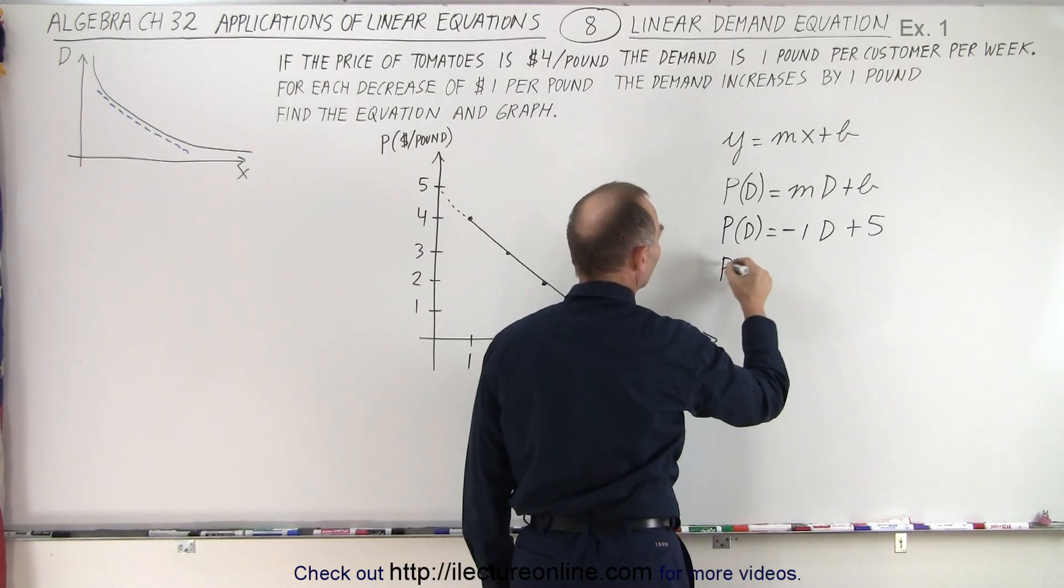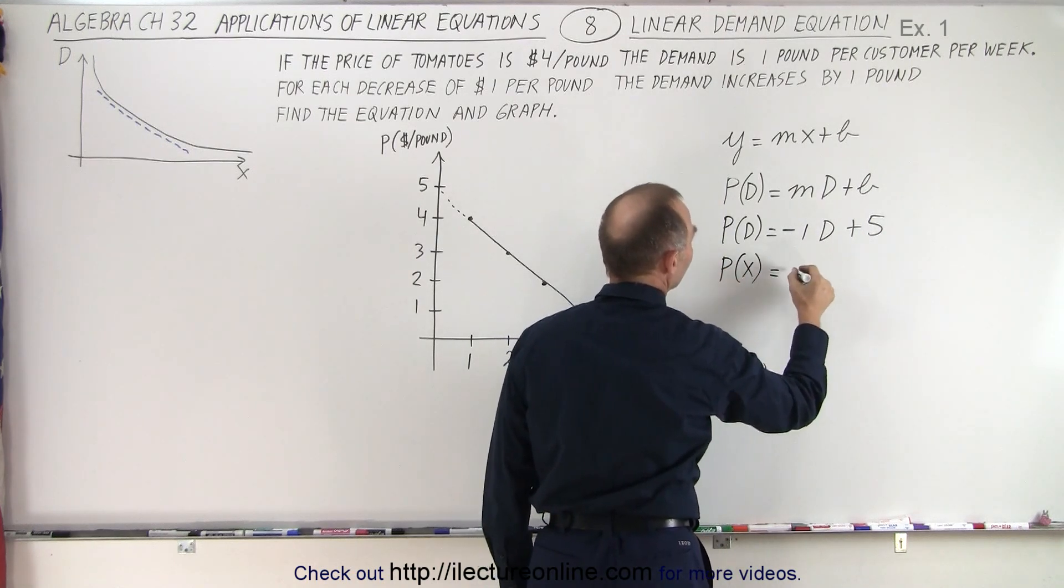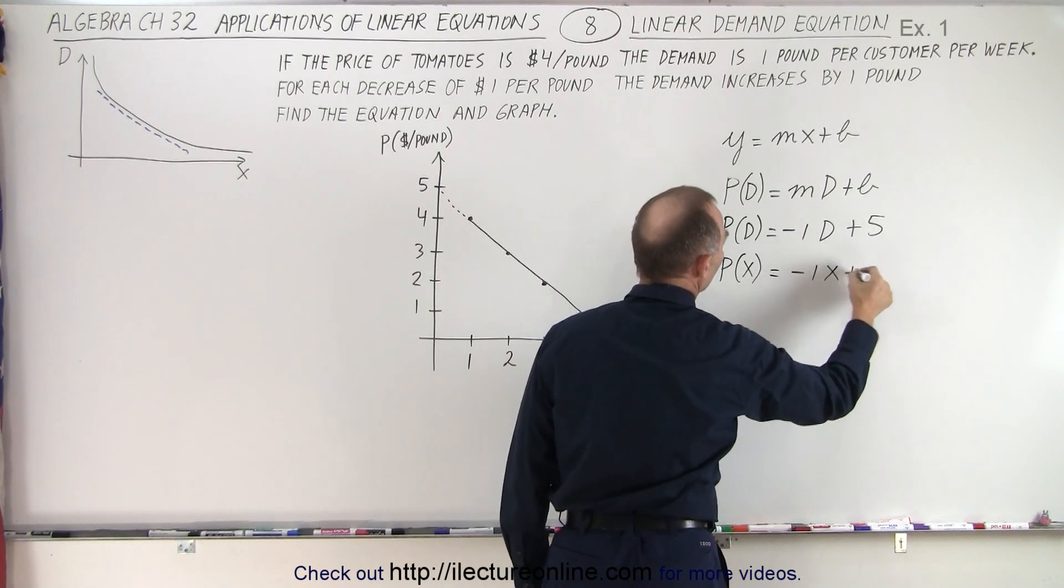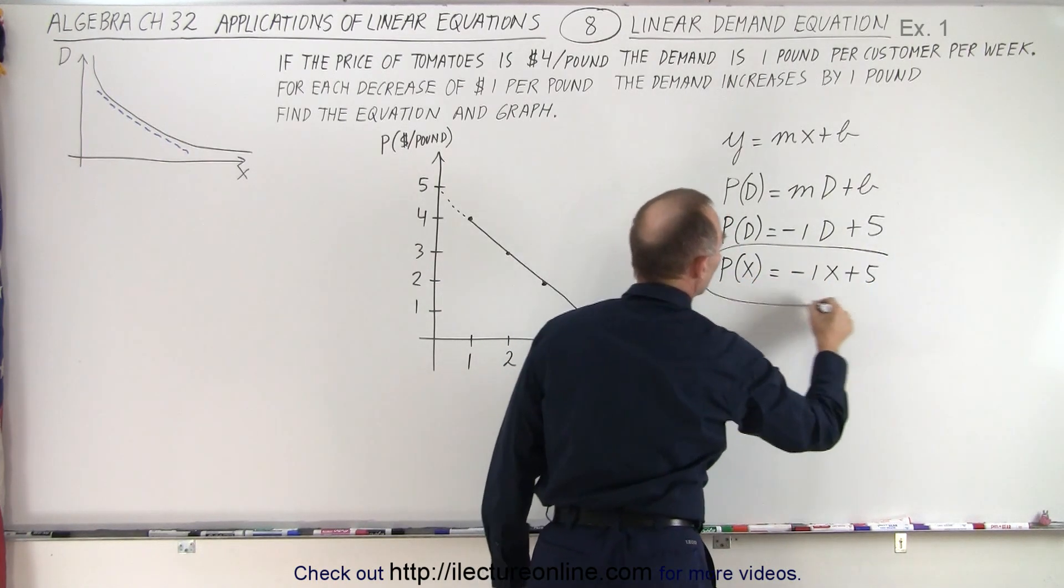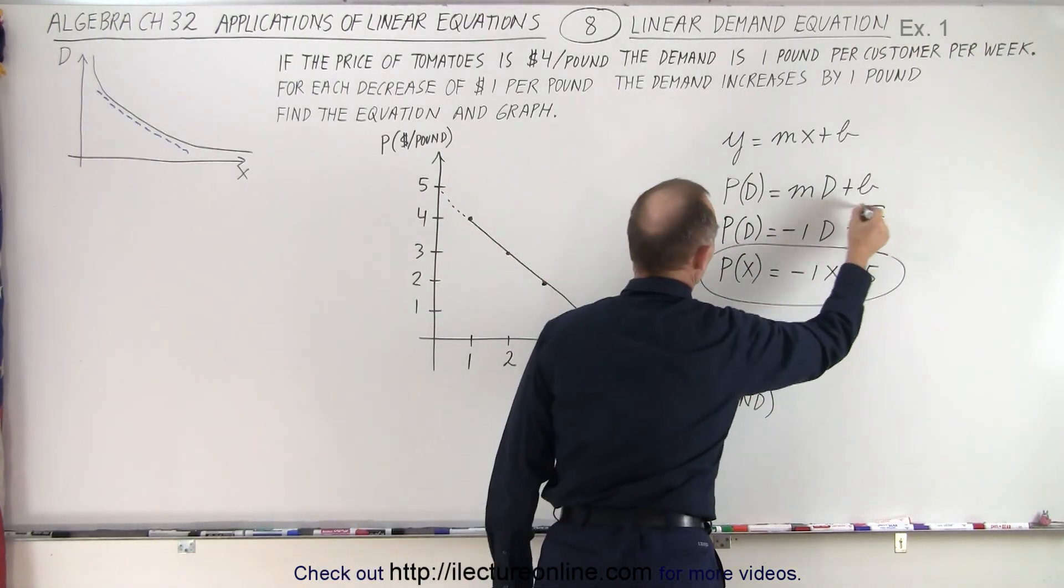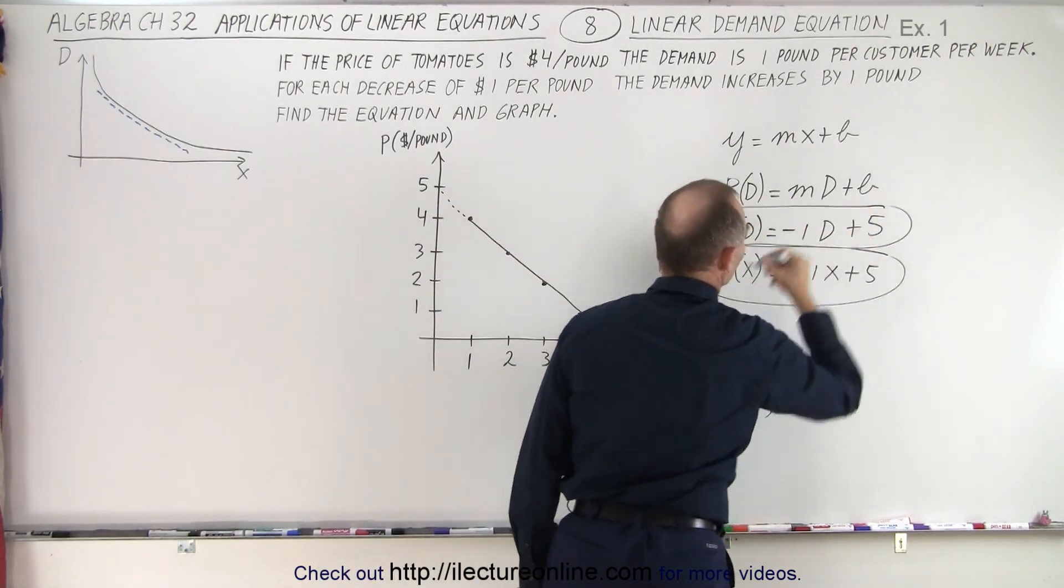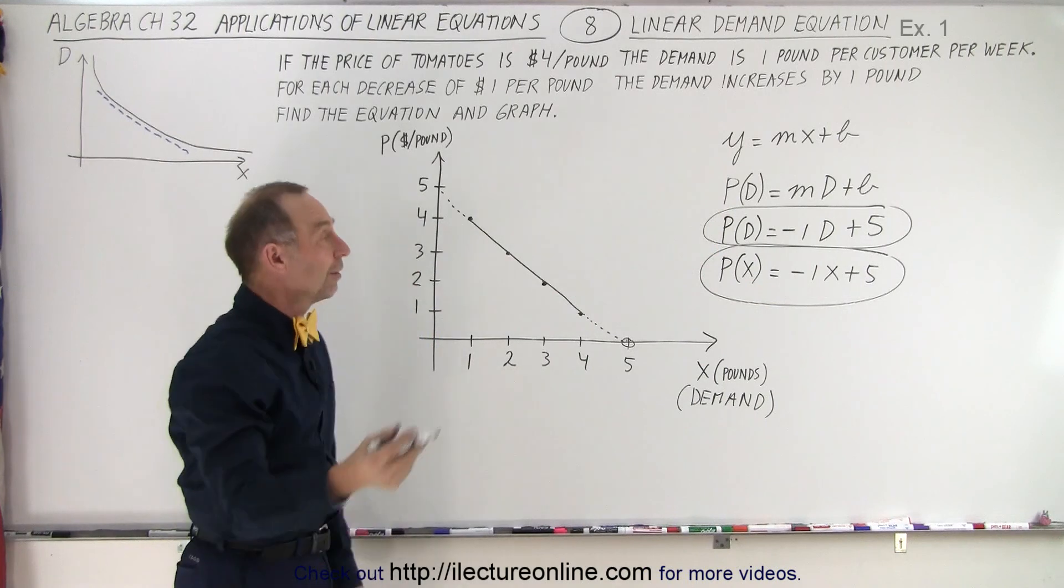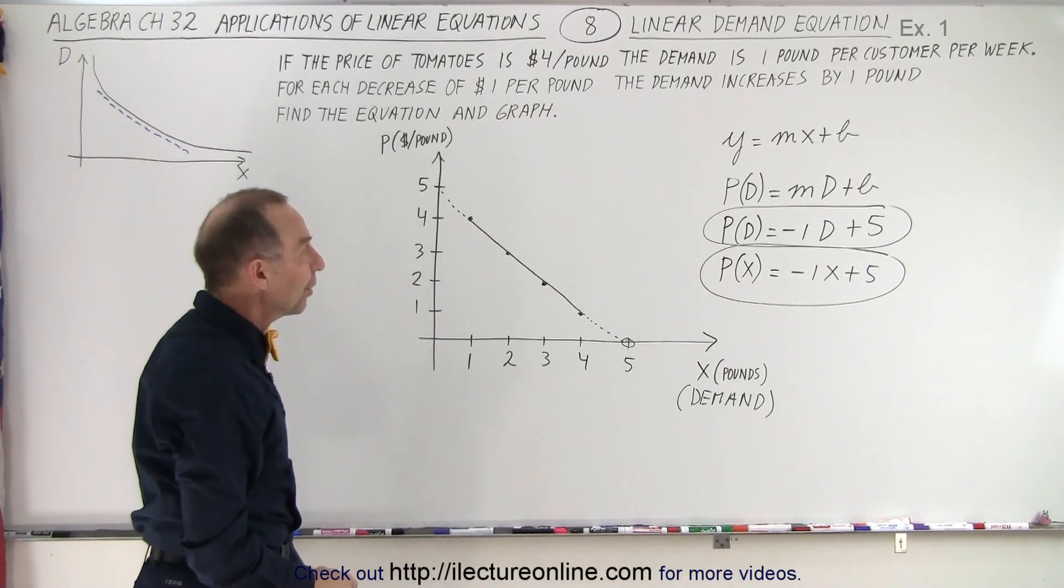Or if you want to use x for a general unit, p of x is equal to minus 1 times x plus 5. And that would be your demand equation. And of course, if you don't like the x, you can go ahead and use this instead. So there we have the demand versus the price.